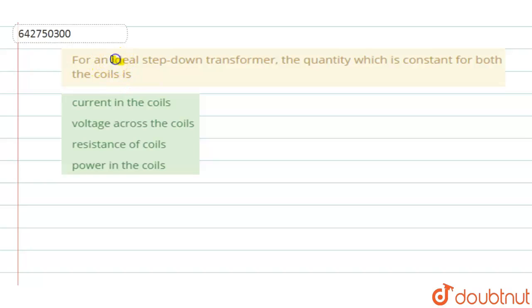For an ideal step down transformer, the quantity which is constant for both the coils is.